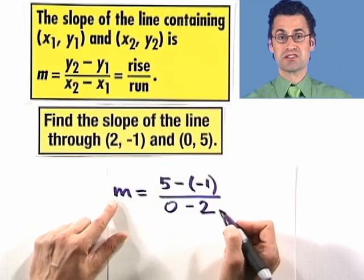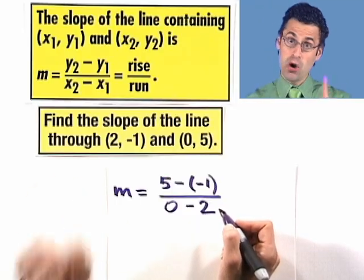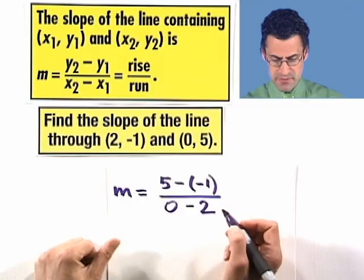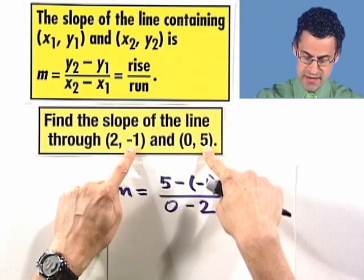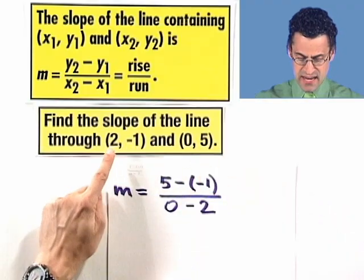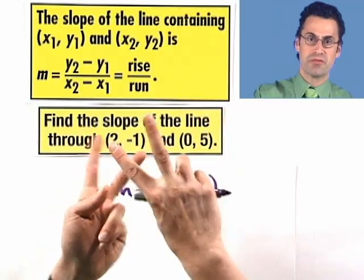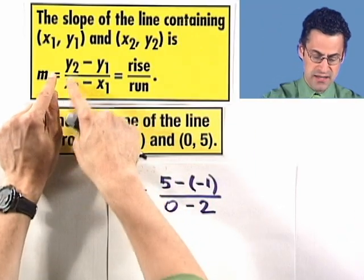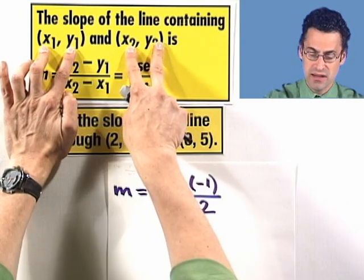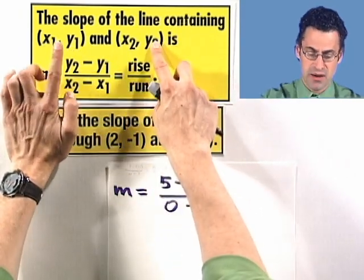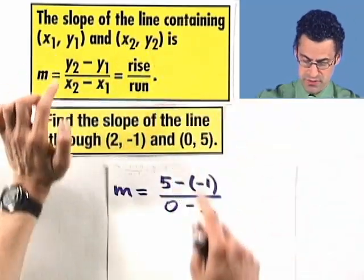Now the reason why I want to take this a little bit slowly is because it's a very common mistake that a lot of people make. I want to show you the mistake, and I hope that you'll never make it. A common mistake is to take the 5 and then subtract the negative 1, and then take the 2 minus 0. See, that person was sort of subtracting the wrong number from the wrong thing. We always have to be very consistent. We have to say which one's the first point, which one's the second point, and then we always take second minus the first. We have to be consistent.